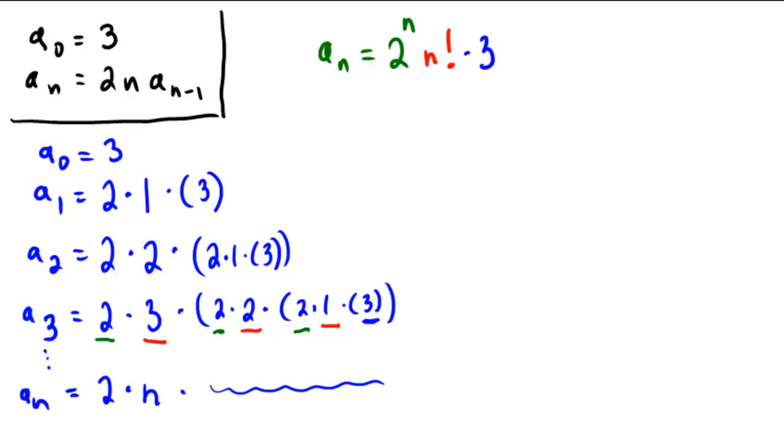So as a final answer to this problem, I would be saying that a sub n seems to be equal to 3 multiplied by 2 to the power of n multiplied by n factorial.